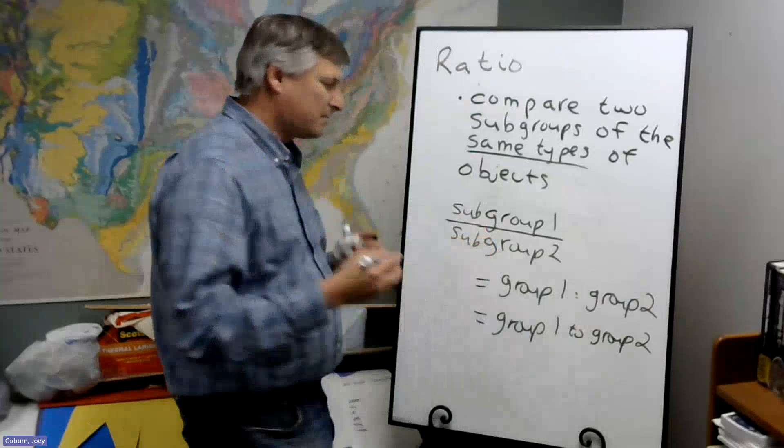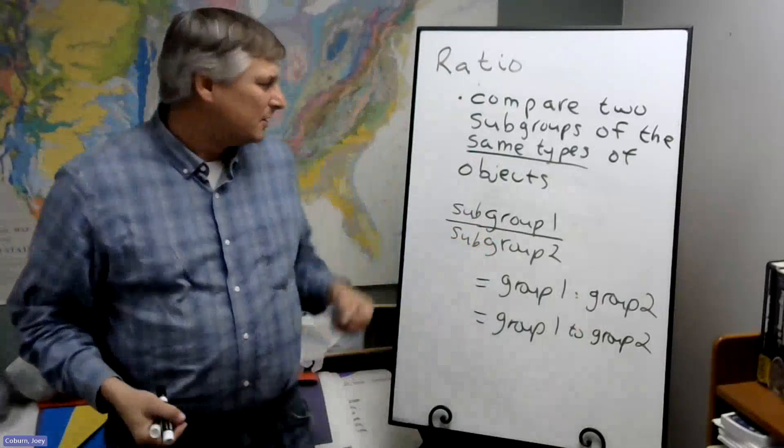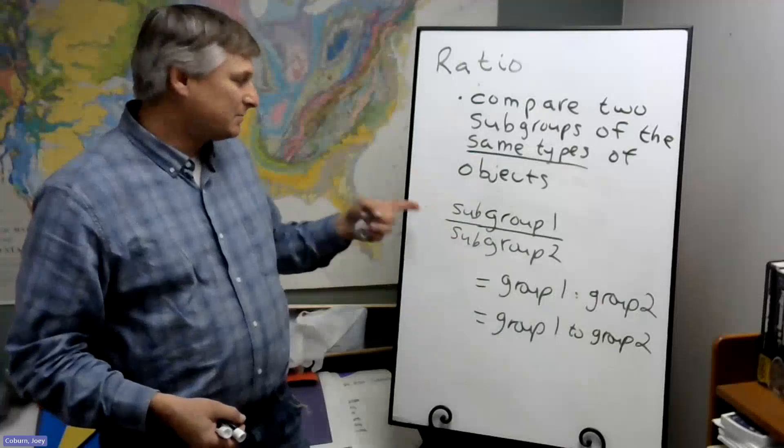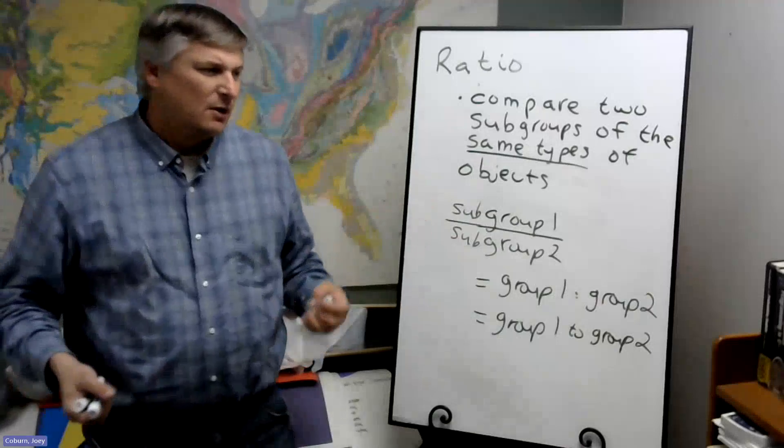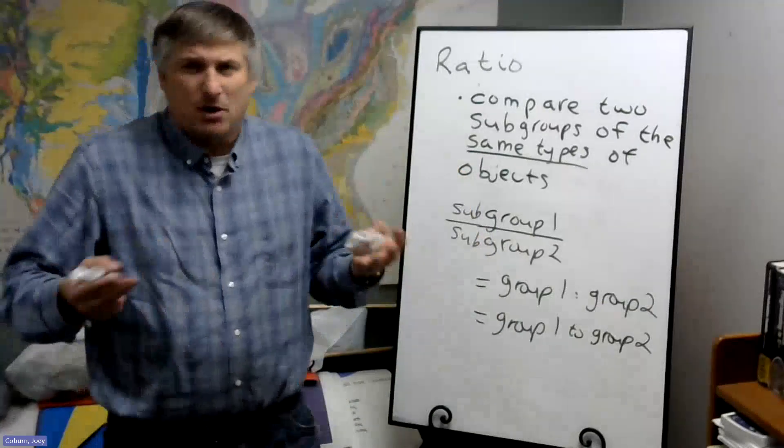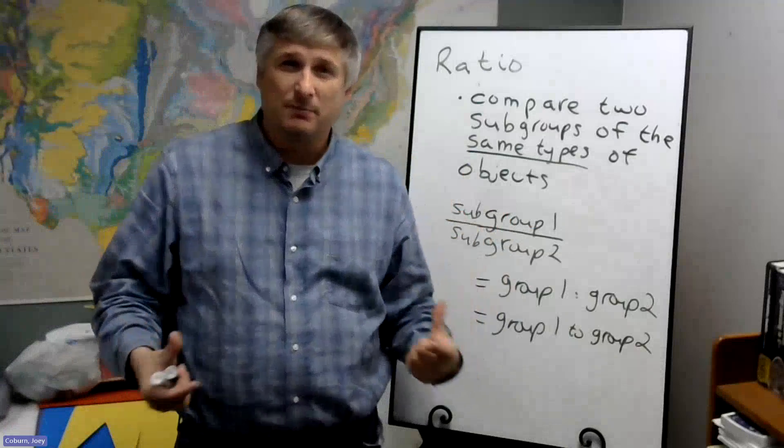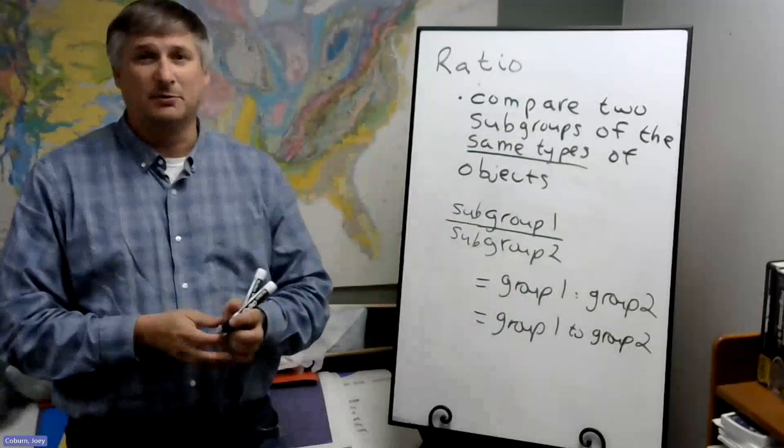They're part, they're members of a bigger group. So like for basketball games, we have wins of basketball games, losses of basketball games. Won basketball games, lost basketball games. Those are all basketball games. We just took basketball games and divided them into two subgroups and compared the subgroups.